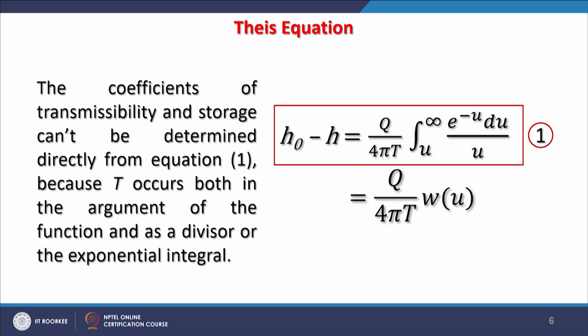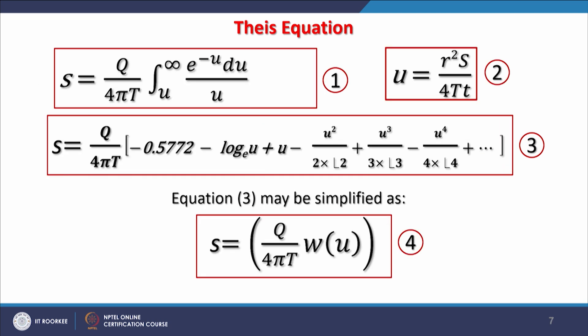The coefficient of transmissibility and storage cannot be determined directly from equation 1 because T occurs both in the argument of the function and as a divisor of the exponential integral. Therefore, we can write it differently: S = Q/(4πT)[-0.5772 - ln(u) + u - ...]. This equation can be simplified as shown in equation 4: S = Q/(4πT)w(u).